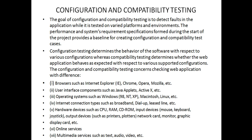These differences include browsers such as Internet Explorer, user interface components such as Java applets, operating systems such as Windows, Macintosh, and Linux, internet connection types such as broadband, dial-up, and leased line, and hardware devices such as CPU, RAM, CD-ROM, input devices, output devices, network cards, monitor, graphics, and display card.